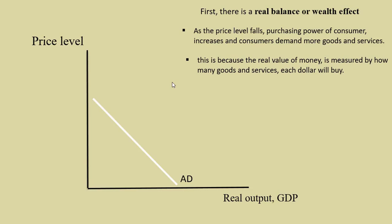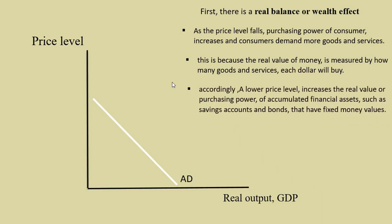This is because the real value of money is measured by how many goods and services each dollar will buy. Accordingly, a lower price level increases the real value or purchasing power of accumulated financial assets, such as savings accounts and bonds, that have fixed money values.